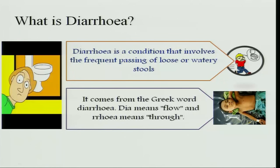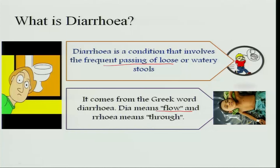Diarrhea is a condition which involves frequent passing of loose and watery stools. It is just opposite to constipation. It has come from the word diarrhea: 'dia' means flow and 'rea' means through. So continuous watery stools of more than 3 to 4 times is diarrhea.